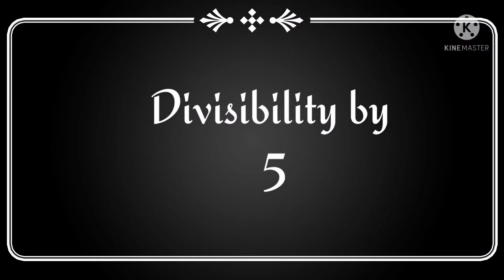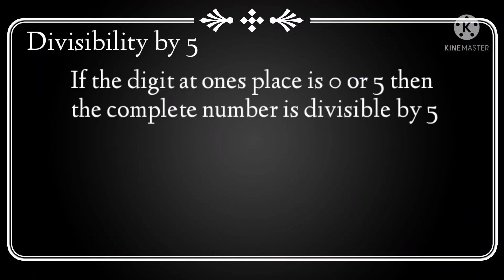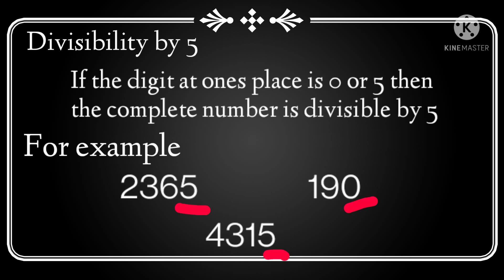Now, next is divisibility by 5. The rule for divisibility by 5 is very easy: if the digit at the 1's place of the given number is 0 or 5, then the complete number is divisible by 5. For example, looking at the 1's places of some numbers — they are either 5 or 0. So those whole numbers are divisible by 5. It is very easy to check this by observing the digit at the 1's place.